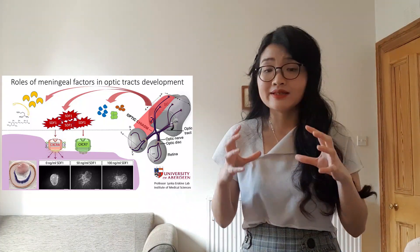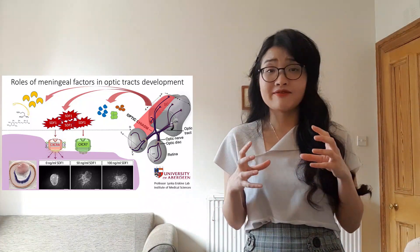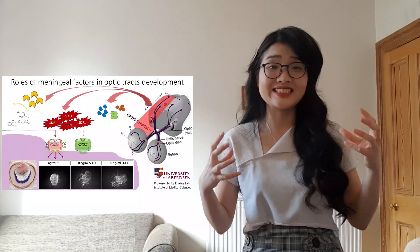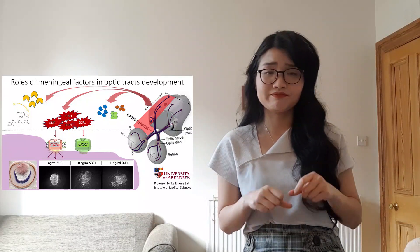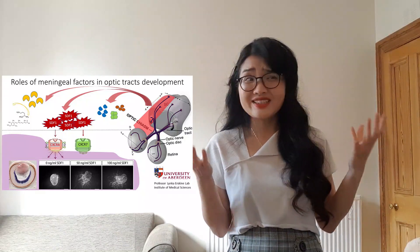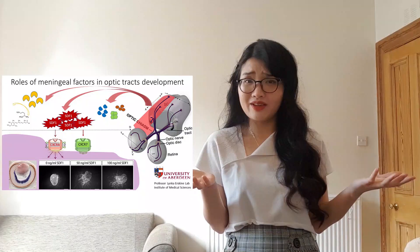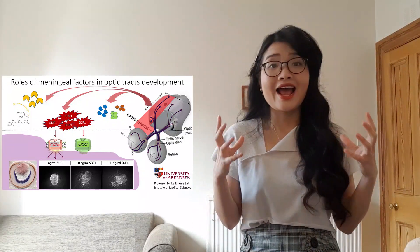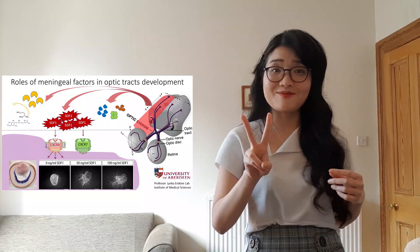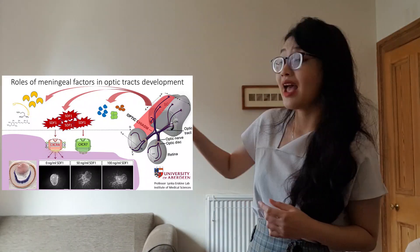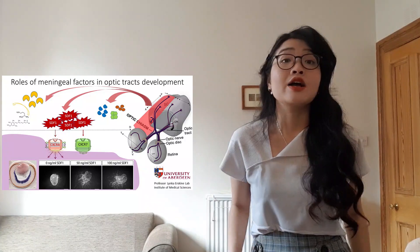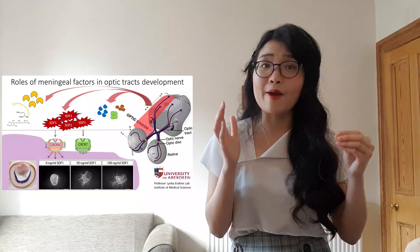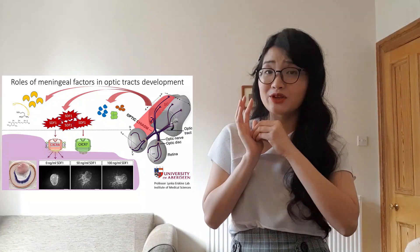We examined SEL1 and identified it as expressed in the meninges and also released from the meninges to nearby the optic tract. We know SEL1 acts on only two different receptors, CXCR4 and CXCR7, so we screened the eyes to see whether the cells express these receptors to accept the signal of SEL1.